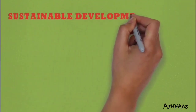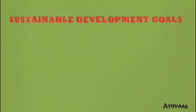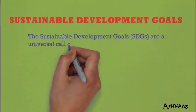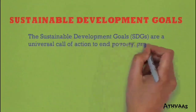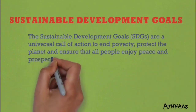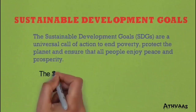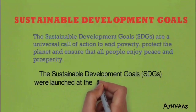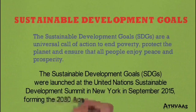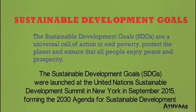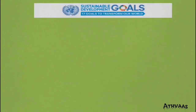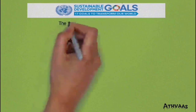Sustainable Development Goals, or SDGs, are a universal call for the prosperity of human beings and for the environment — to reduce poverty and protect our planet. These SDGs were proposed and set by the United Nations Organization in New York in September 2015, setting new agendas for sustainable development.